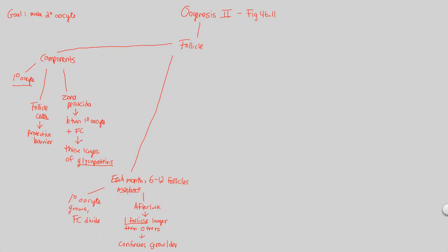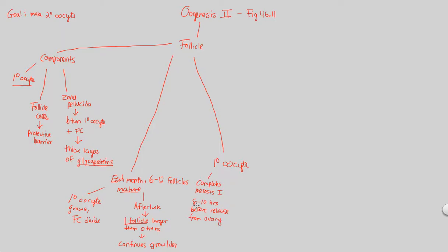Looking at the primary oocyte in more detail as it matures within the chosen follicle: through hormonal guidance, the primary oocyte — previously arrested at prophase 1 — completes meiosis 1 as the follicle grows. This completion occurs about 8 to 10 hours before it's released from the ovary. The release from the ovary is the point of ovulation.